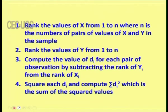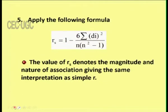We have to first rank the data, find the difference of ranks d-i, then find d-i squared, and apply the formula: r equals 1 minus 6 times summation of d-i² divided by n times (n² minus 1). This formula is much simpler, and it gives you the rank correlation coefficient.